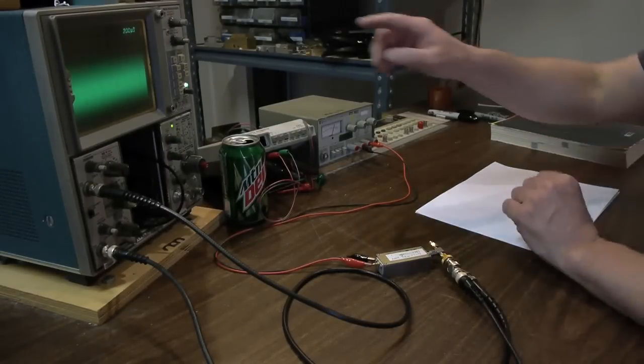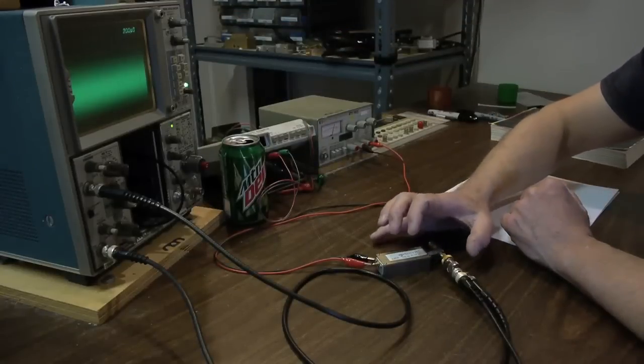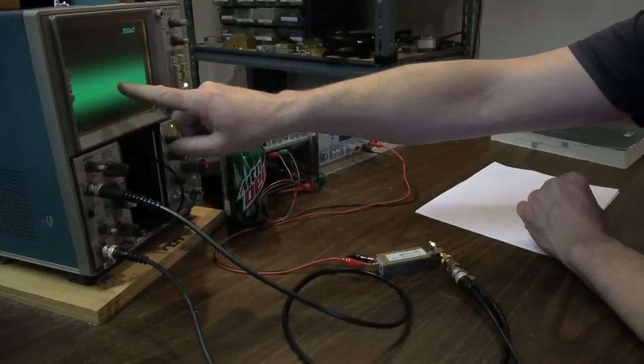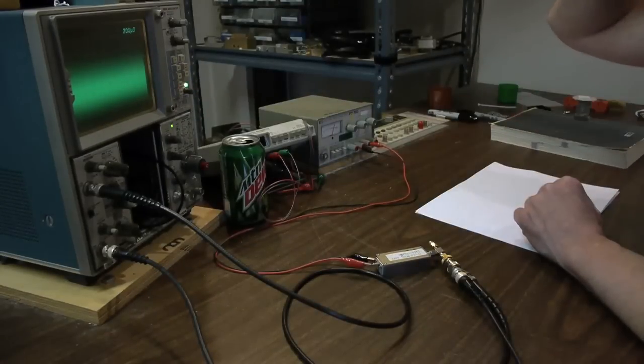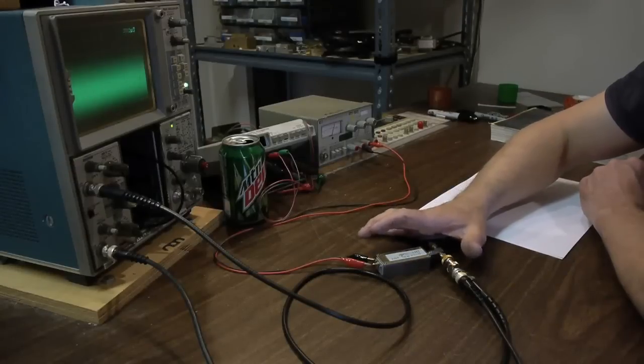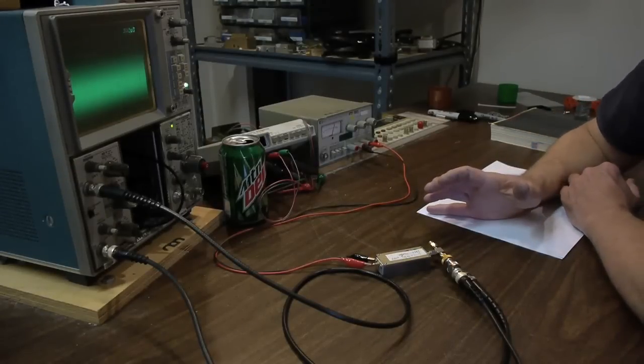What we have here is the scope hooked up to a noise source, and we can see on the screen a noise wave being generated by the noise source. I measured the output power of the noise source using a power meter to be negative 23 dBm.